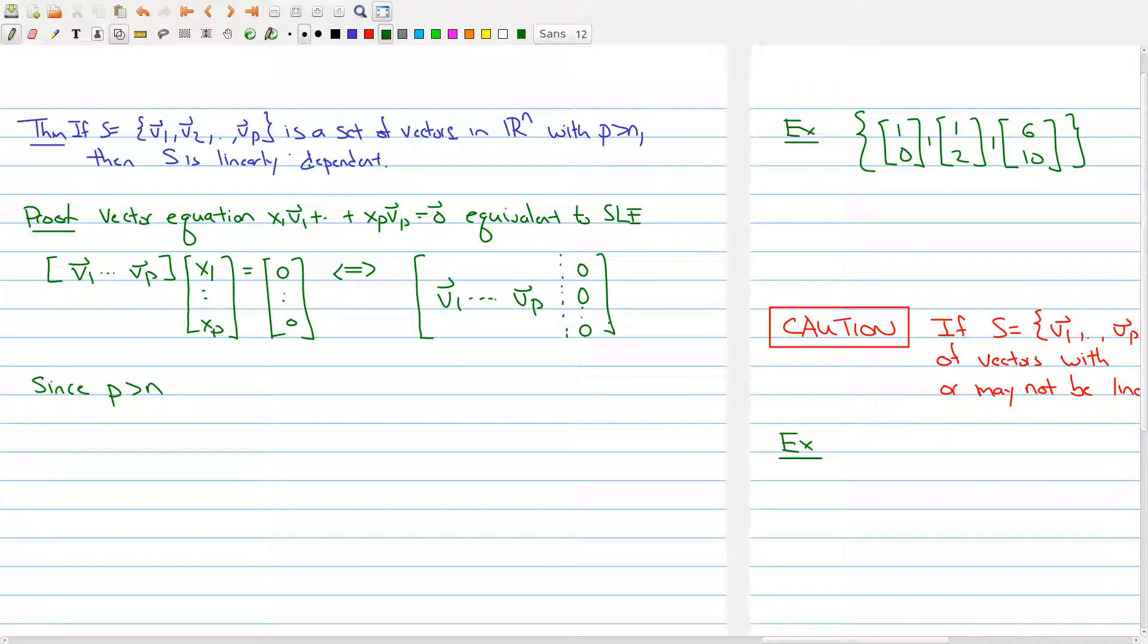Now, what we have to take away is that the number of rows here is n, and the number of columns is p. And we're given that p is greater than n.